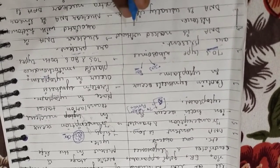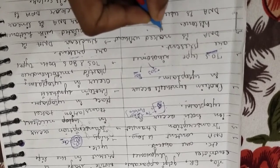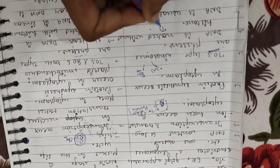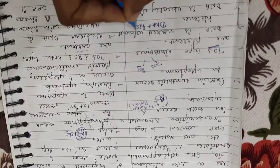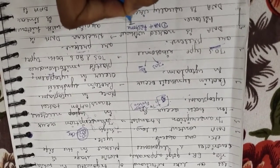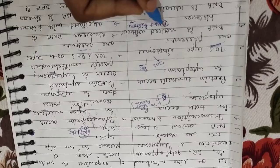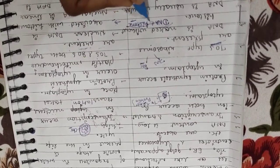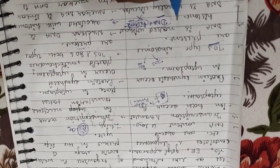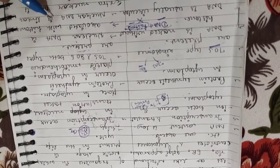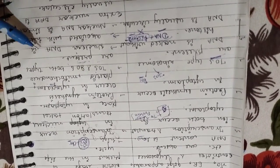Next difference: prokaryotic cells have naked DNA. The question arises — what is naked DNA? In eukaryotic cells, DNA in the nucleus is wrapped with histone proteins. In prokaryotic cells, this condition is absent — the DNA content is without histone proteins, which is why it is called naked DNA.